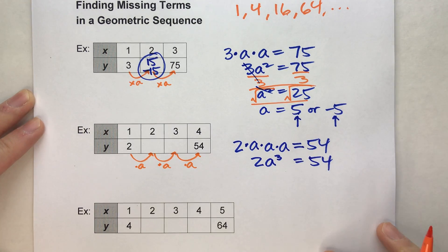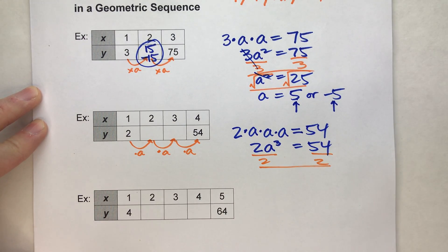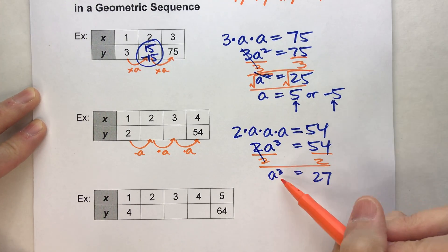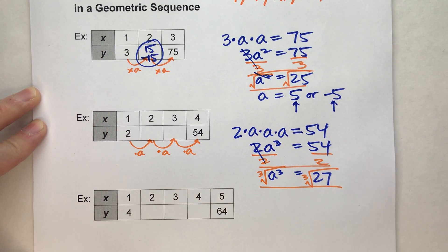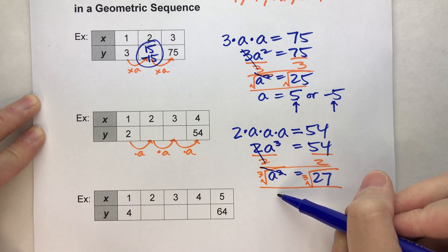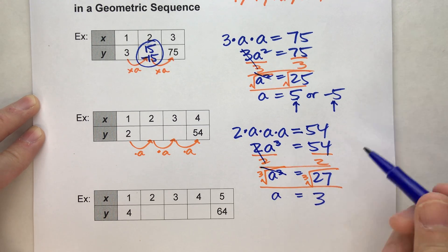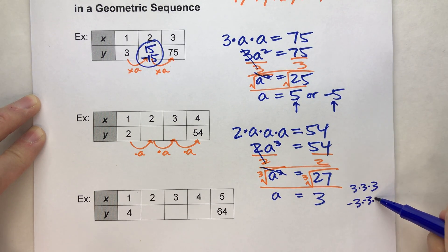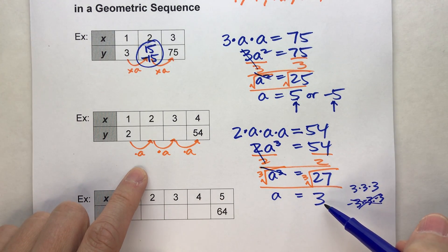We can solve this equation to figure out the common ratio. Dividing both sides by 2, we get a cubed equals 27. To undo a cubed, we cube root both sides. Unlike square roots, cube roots only have one possible answer. The cube root of 27 is just 3, not negative 3, because negative 3 times negative 3 times negative 3 equals negative 27, not 27. So we must be multiplying by 3.